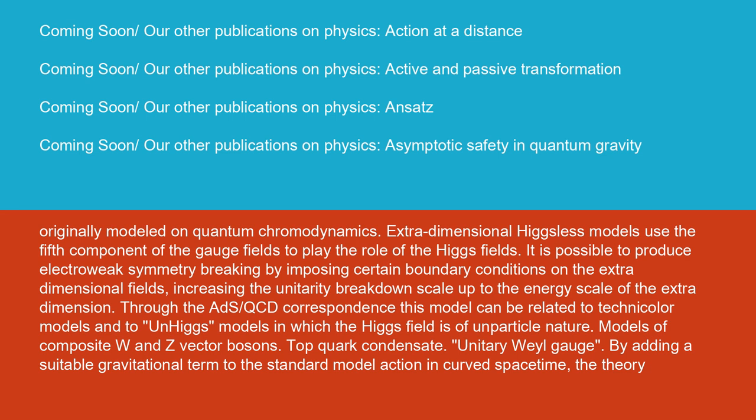Extra-dimensional Higgs-less models use the fifth component of the gauge fields to play the role of the Higgs fields. It is possible to produce electroweak symmetry breaking by imposing certain boundary conditions on the extra-dimensional fields, increasing the unitarity breakdown scale up to the energy scale of the extra-dimension. Through the AdS/QCD correspondence, this model could be related to technicolor models and to un-Higgs models in which the Higgs field is of unparticle nature.